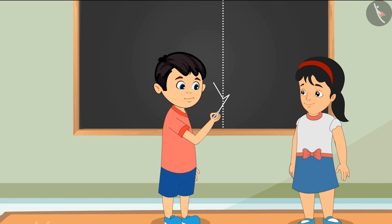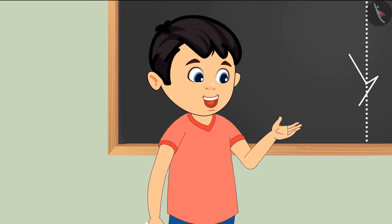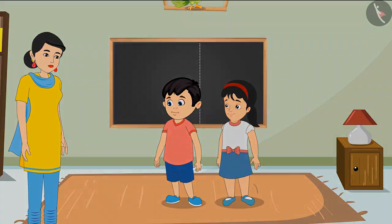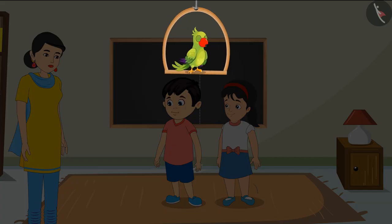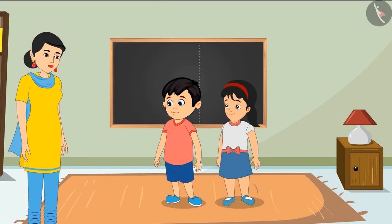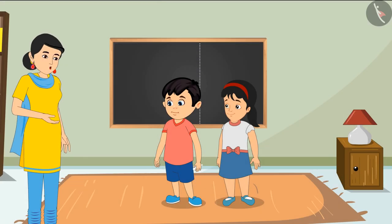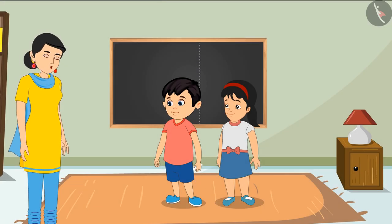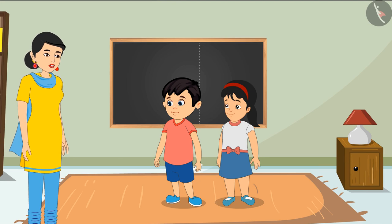'No Pinky, you have plenty of space, I will make it here!' Seeing Chotu and Pinky arguing, their mother comes and says: 'Chotu, Pinky, why don't you do one thing — take a measure of your space.'